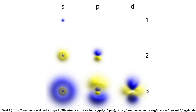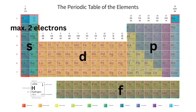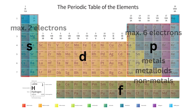The outermost orbital of an element defines which block it belongs to. Let's start with the S block on the far left. This includes elements with their outer electrons in an S orbital, such as hydrogen and helium. S orbitals are spherical in shape and can hold up to two electrons. The P block is on the far right, and it contains elements with outer electrons in P orbitals.